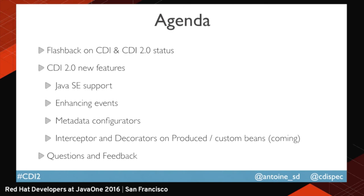During this presentation, we will talk about the history of CDI — all the stuff that was done in CDI since the first version in 2009. We'll also deal with new features coming in CDI 2 that you can already test. The major ones are the Java SE support and the new event stuff. I'm not sure we'll be able to cover all points because I don't have a lot of time.